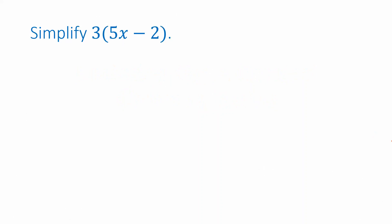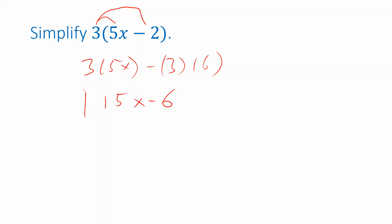First of all, factoring is really just the reverse of distribution. Remember, distribution is something like this: you've got a product and you want to simplify it, you want to get rid of the parentheses, so you distribute the multiplication. 3 times 5x is 15x, and 3 times 2 is 6. That is what we get after we perform distribution. And factoring is just the reverse process. So if I started with 15x minus 6 and I want to know how to write it in factored form as two expressions multiplied together, I want to figure out what quantity I could pull out front.